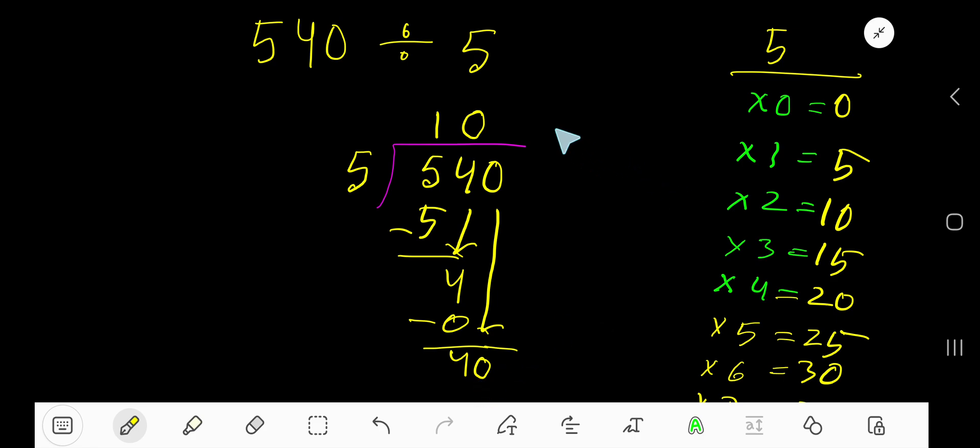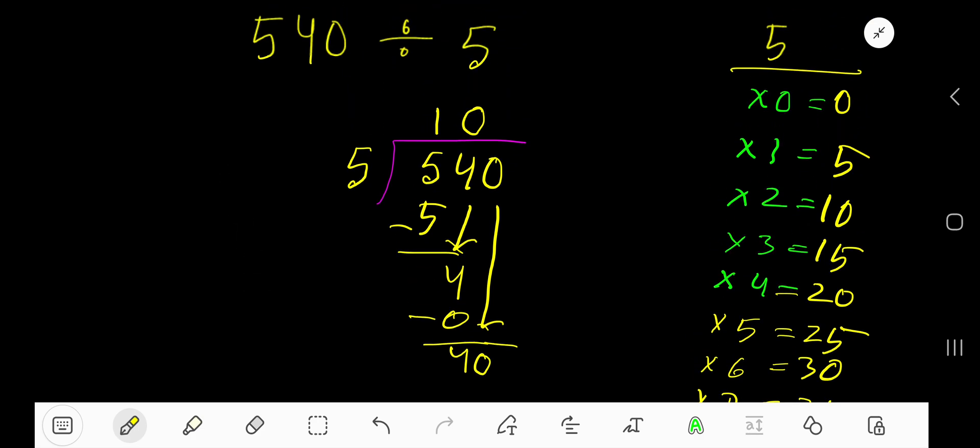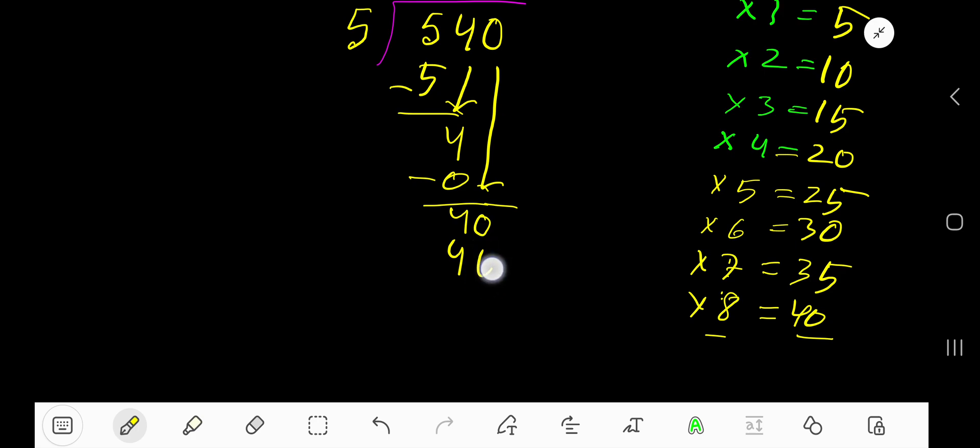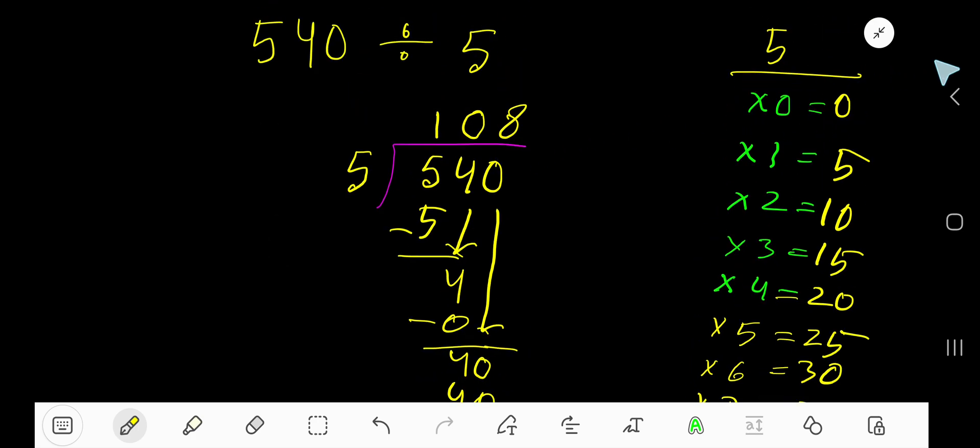Okay, 5 goes into 40, 8 times. Write 8. 8 times 5 is 40, subtract, 0. So your answer is 108.